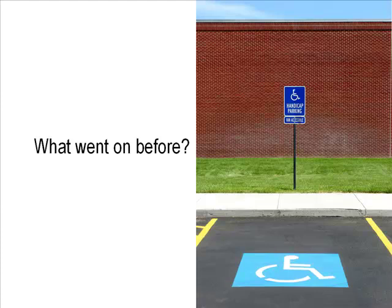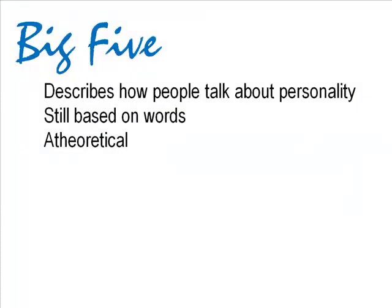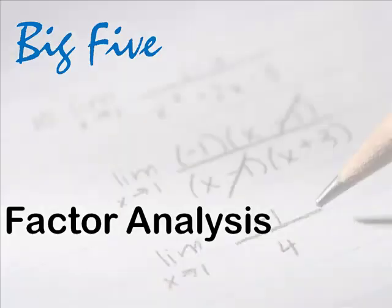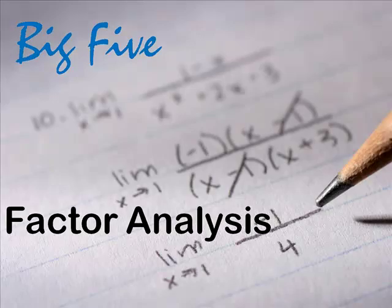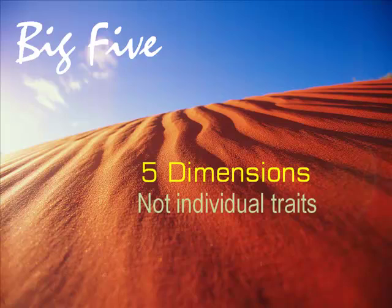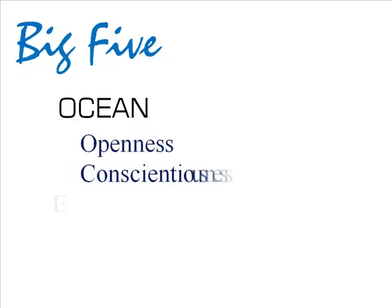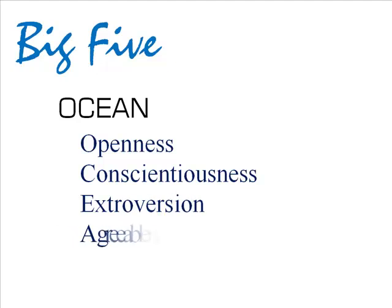The most recent trait theory is a multidimensional theory called the Big Five. It is a consensus theory, not the work of a single person, and is the culmination of work over three decades using factor analysis. The Big Five are not specific traits, but dimensions. They are often summarized in a mnemonic device such as OCEAN or CANOE. The letters stand for Openness, Conscientiousness, Extroversion, Agreeableness, and Neuroticism.